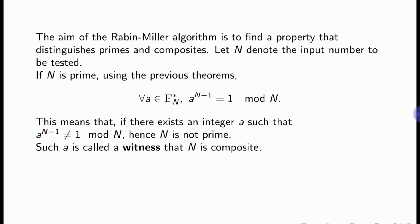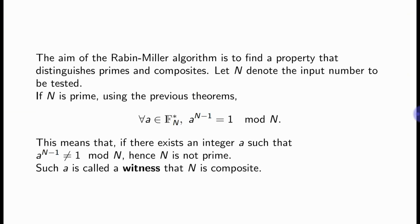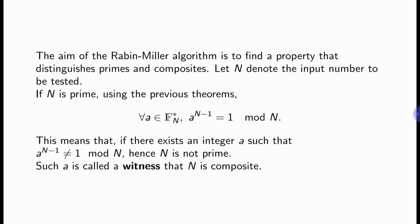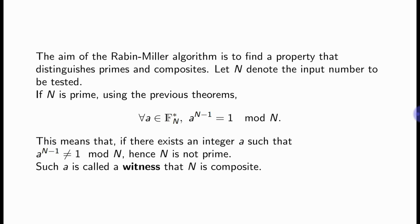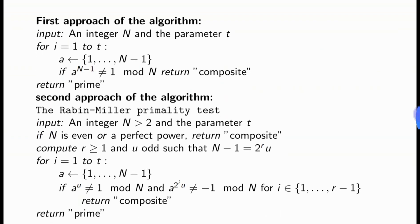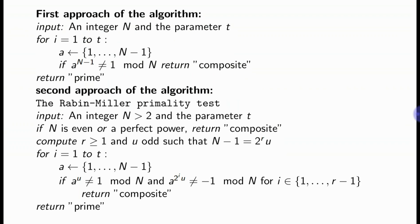The aim of the Rabin-Miller algorithm is to find a property that distinguishes primes from composites. According to the algorithm, if N is prime, then for all A in the finite field, A raised to the power N minus 1 is congruent to 1 modulo N. So if we can find some A such that A to the power N minus 1 is not congruent to 1 modulo N, then N is not prime. Such an A is called a witness that N is composite. If we cannot find any witness, the number is considered prime. The second approach of the algorithm is much more efficient than the first.